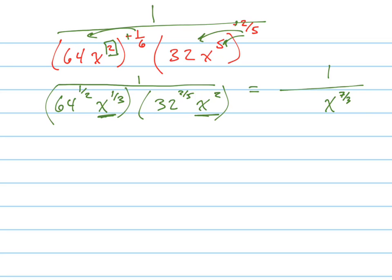So how do I do this one? Well, 64 is 2 to the 6th power, and so really I have 2 to the 6th power to the 1/6 power, so those cancel and I just have 2. So this just equals 2.